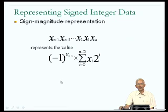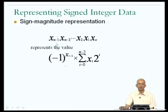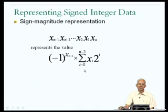So this seems like a good idea as far as the representation of signed integers is concerned, because it makes it possible for me to represent not only positive values using x_{n-1} = 0, but also negative values with x_{n-1} = 1. The remaining n-1 bits from x_0 up to x_{n-2} can be used to represent the magnitude of the signed integer value.